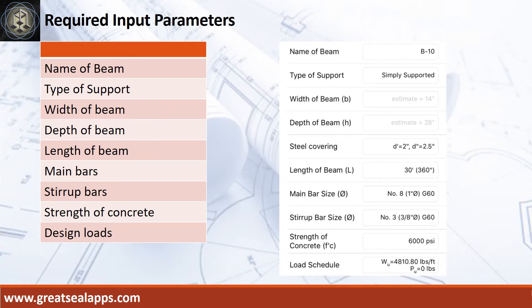Enumerate input parameters required. Name of beam: B10. Type of support: simply supported. Width of beam: 14 inches. Depth of beam: 28 inches. Length of beam: 30 feet.